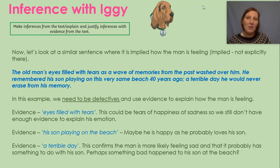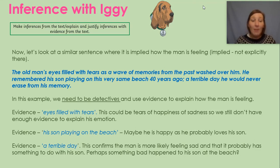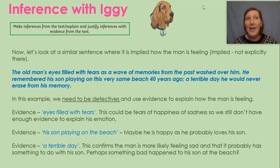'A terrible day he would never erase from his memory.' That is the final piece of the clues to help us infer what the man is feeling. 'A terrible day' confirms that the man is more likely to be feeling sad, and that probably has something to do with his son. So his eyes filled with tears, his son playing on the beach, but a terrible day — those three key pieces of evidence together let me infer that possibly his son had an accident at the beach and something really bad happened, and the man is feeling really sad about it.